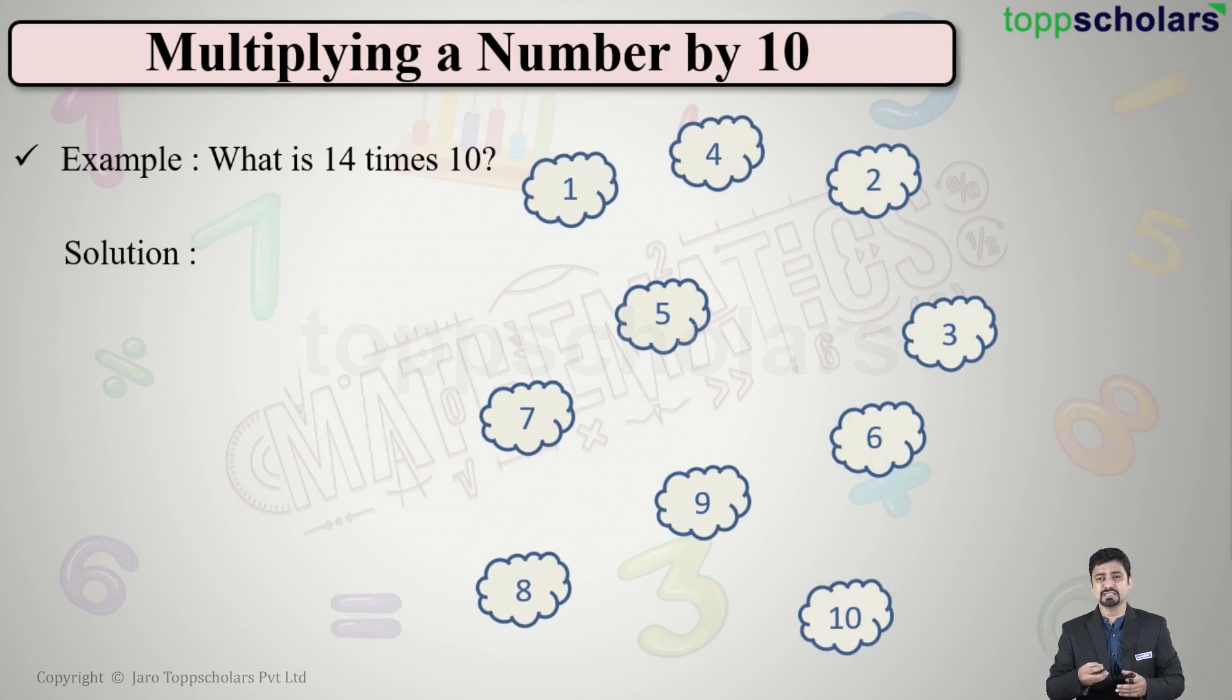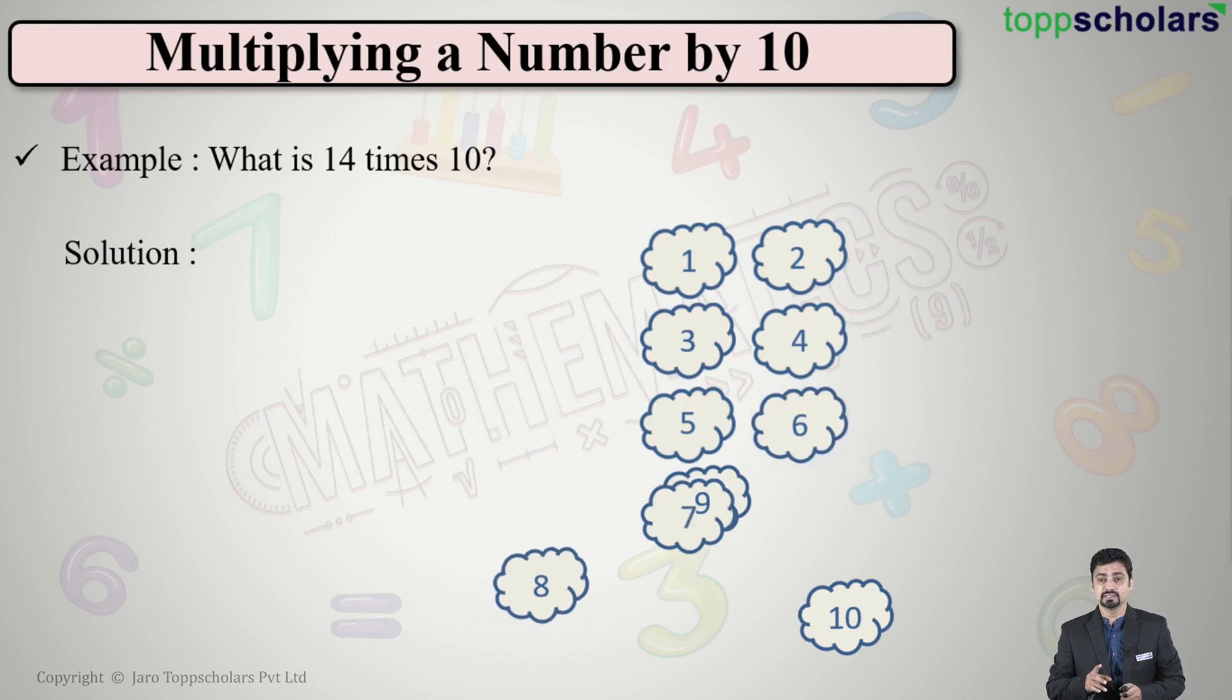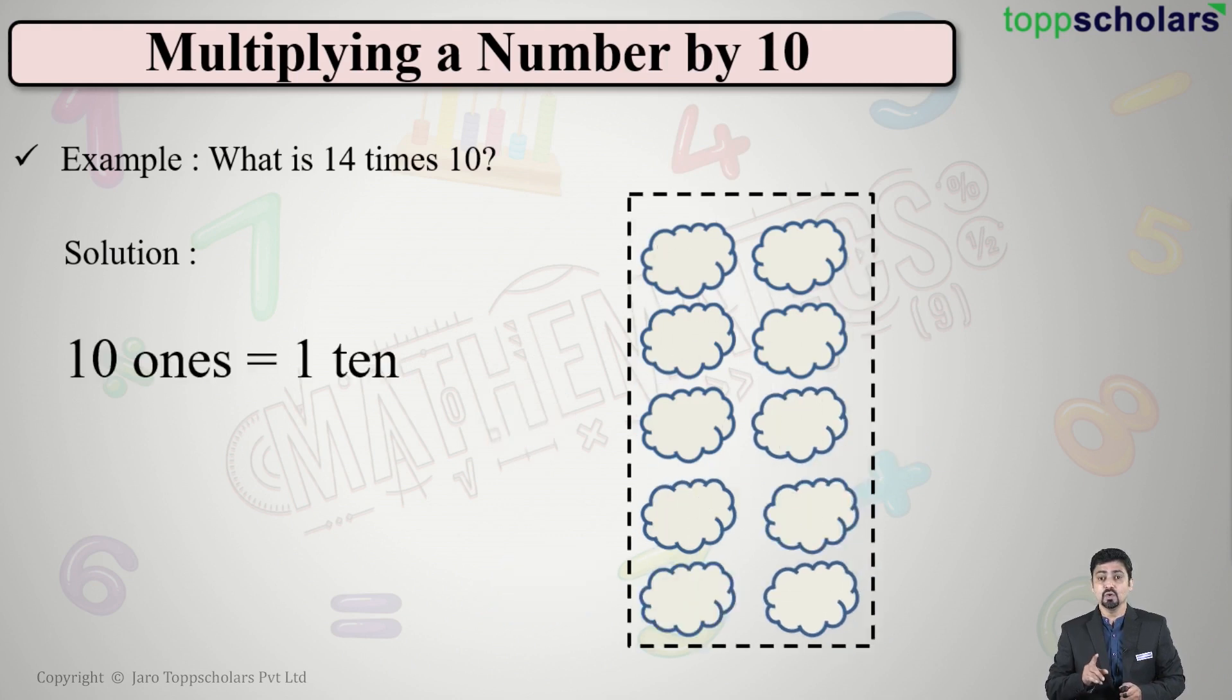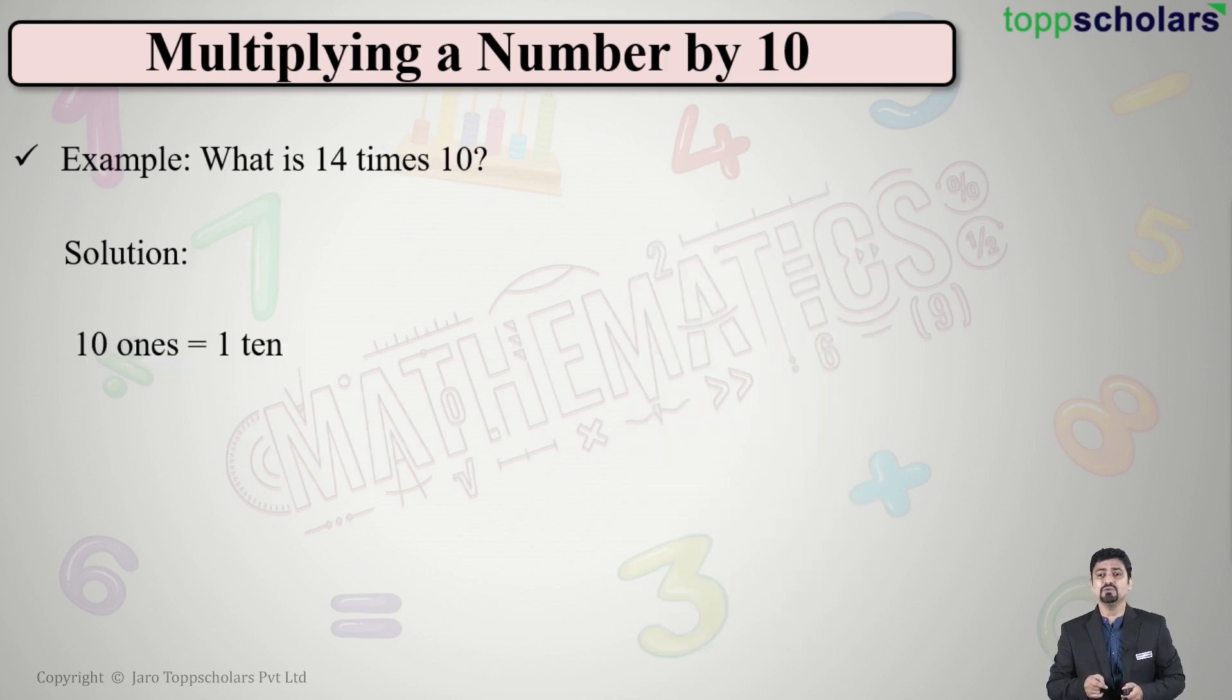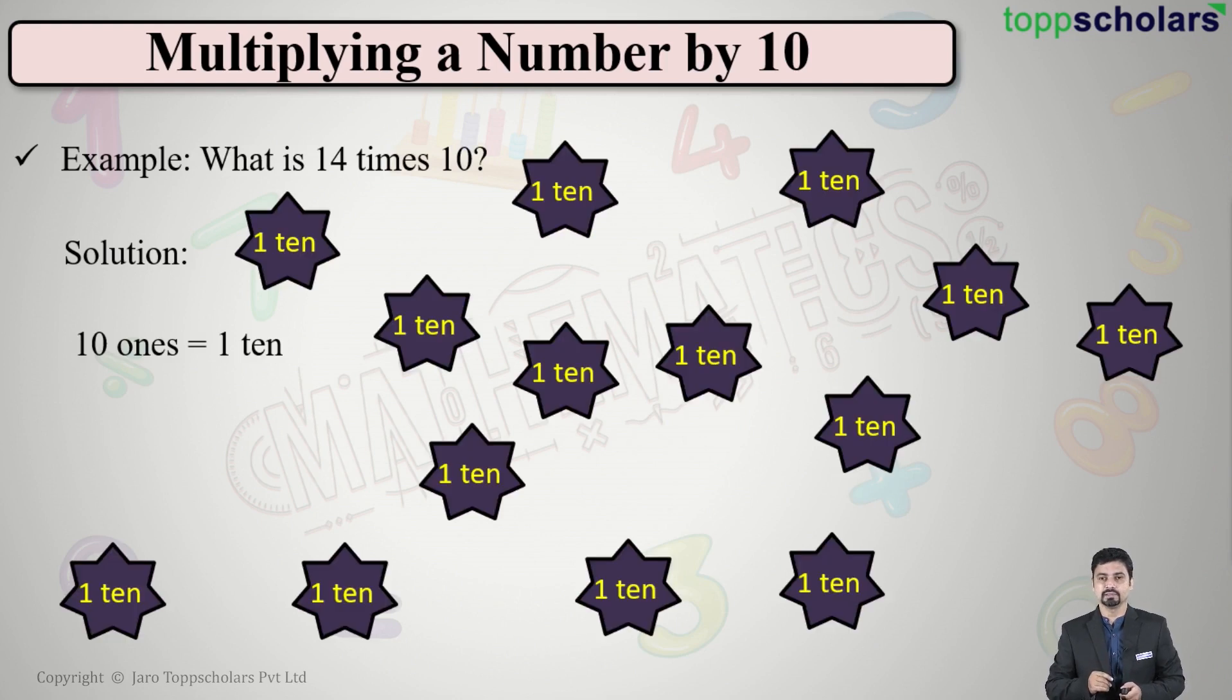have is 10 once. 10 ones is equal to 1 ten. Let's take one more example. This time I have some stars and each star is equal to 10.